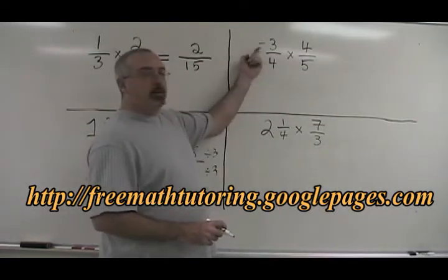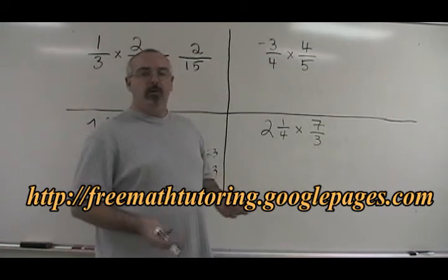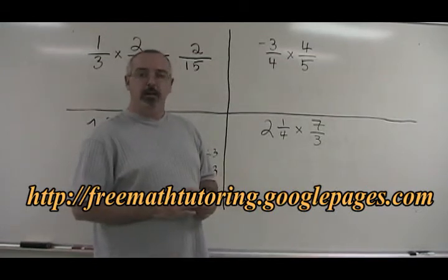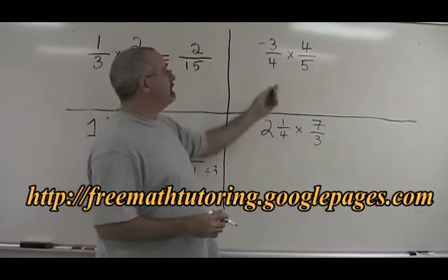What if we have a negative sign in one of the fractions, or in both fractions? We've already learned integers and how to deal with signs. We have to remember those rules when we do this multiplication.